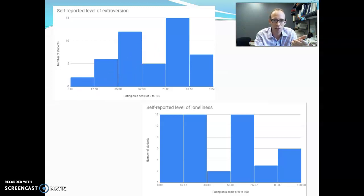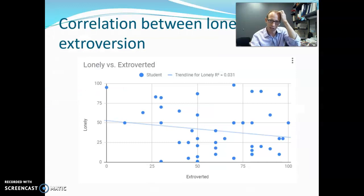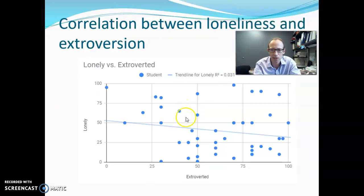So here's what we do to take a look at the correlation. We plot this, we plot this on a chart. So each data point here is a student. So this particular dot here is a student who rated himself or herself about a 40 on extroverted scale, and about a, I don't know, 65-70 on the loneliness scale.